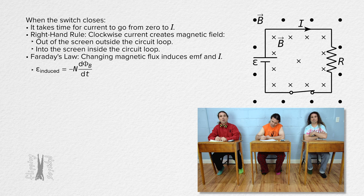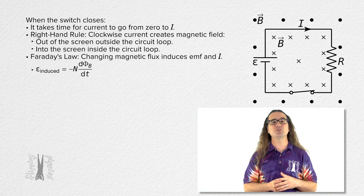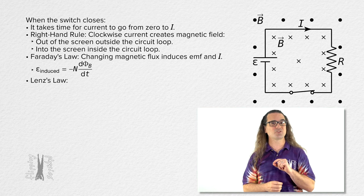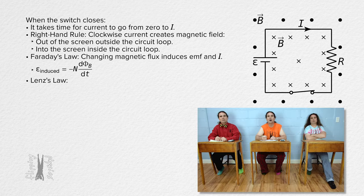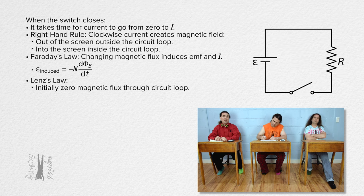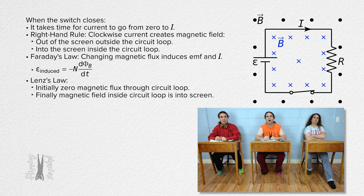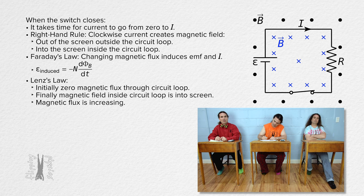There absolutely is. Now, please use Lenz's law to determine the direction of the induced current that would go along with that induced EMF. Initially there is zero magnetic flux through the circuit loop. Finally, there is a magnetic field which is into the screen inside the loop. Therefore, the magnetic flux is increasing. Remember, only the magnetic field which passes through the inside of the loop causes magnetic flux through the loop.